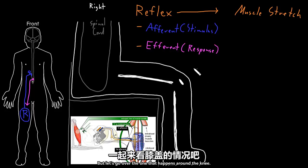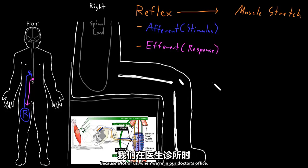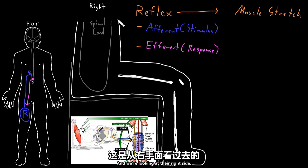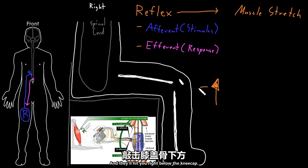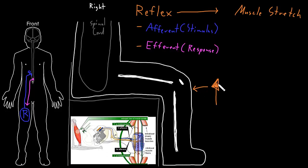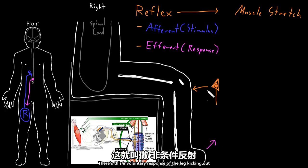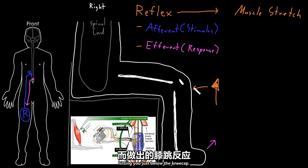Let's go over the one that happens around the knee, also called the knee jerk, because most of us are familiar with this. When we're in our doctor's office, sitting in a chair — here I've drawn a person and we're looking at their right side — the doctor will take a little rubber hammer and hit you right below the kneecap. To your surprise, your leg will often kick out without you telling it to — there's this involuntary response to the stimulus of the rubber hammer hitting you just below the kneecap.